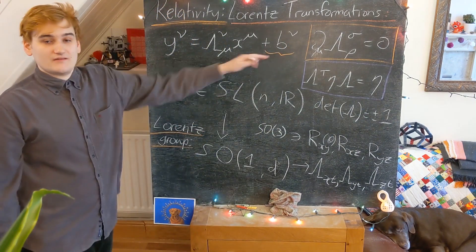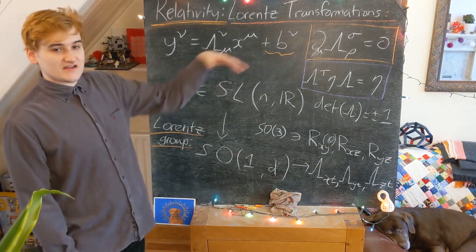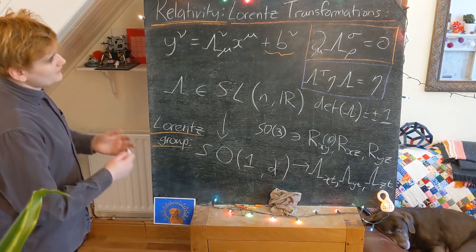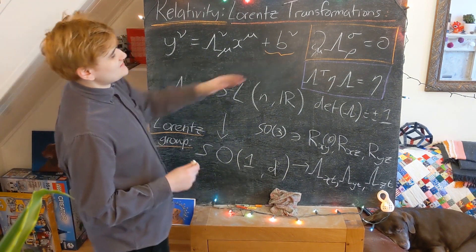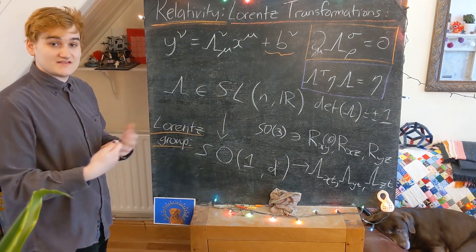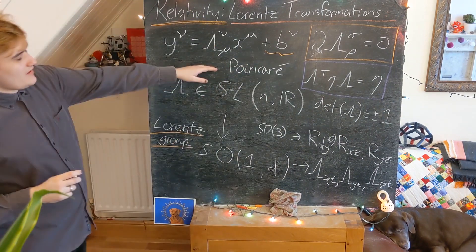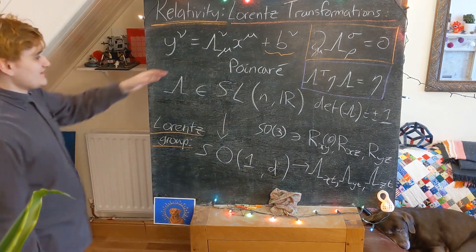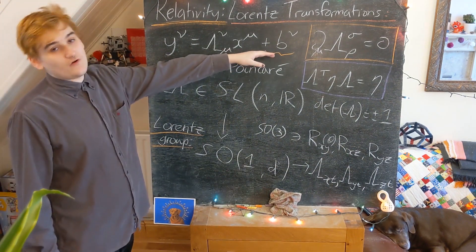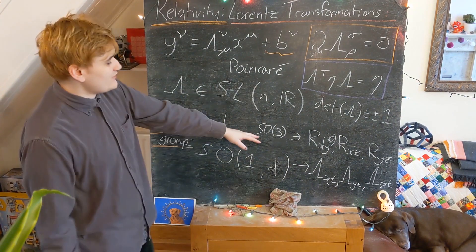But if we include it, this simply would just correspond to essentially just translating the origin of our coordinates by some constant vector. And we refer to this just kind of a simple shift in position of coordinates. This is what's known as a Poincaré transformation.